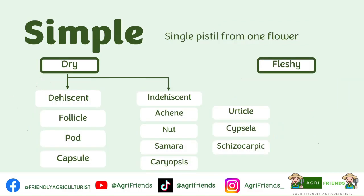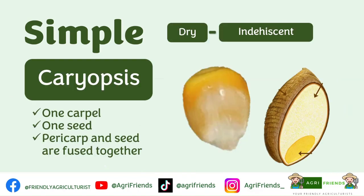For the indehiscent fruits — fruits that do not split at maturity — there are several types. The caryopsis or grain develops from one carpel containing a single seed. The pericarp is tightly fused to the seed, so they are inseparable. An example is corn and wheat. In corn, the membrane-like structure surrounding each kernel is the pericarp.